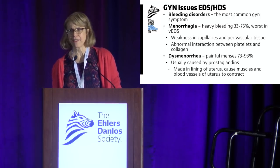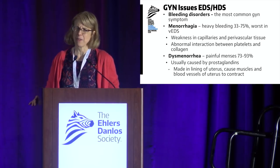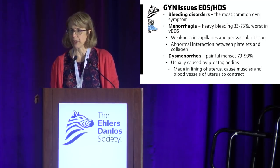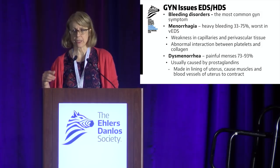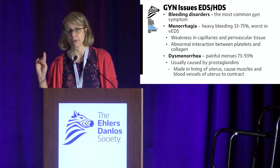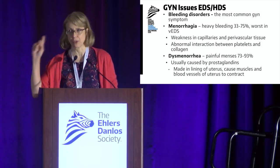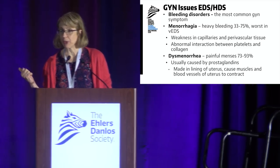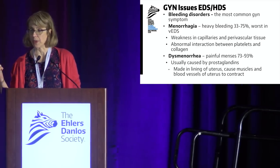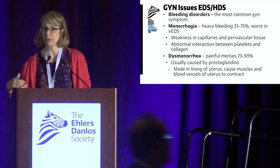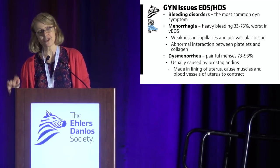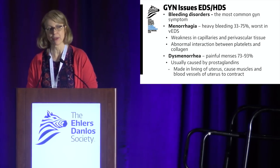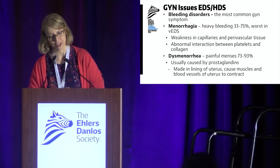Painful menses — dysmenorrhea — occurs in 73 to 93% in these studies. The thought is there's a release of prostaglandins from the uterine lining causing muscles and blood vessels to contract, tied into heavier bleeding. In the general population, dysmenorrhea tends to improve with age and after having children. Unfortunately, with connective tissue disorders it sticks with you throughout your entire menstrual life, so it's very important to try to treat it.